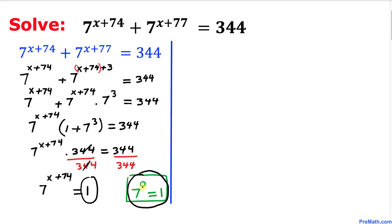So therefore I can write this thing: 7 to the power of x plus 74 equal to 7 to the power of 0. And now as you can see, we've got the same base on the right-hand side. As long as our bases are the same, we can equate our exponents as well. So this left-hand side exponent equal to this right-hand side.